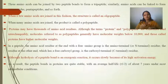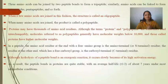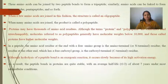In a peptide, the amino acid residue at one end with a free amino group is the amino-terminal (N-terminal) residue. The residue at the other end, which has a free carboxyl group, is the carboxyl-terminal (C-terminal) residue.